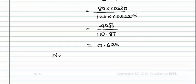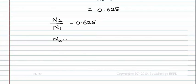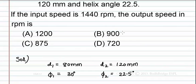So N2 by N1 is equal to 0.625. N2 is equal to 0.625 N1 which is equal to 0.625 into 1440 which gives 900 rpm. So the correct option is option B 900 rpm.